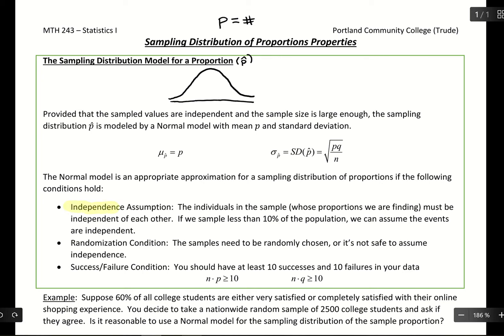We need to have independence. We need to have randomization. And then we're going to have this success failure condition which checks our sample size. And that's where you want to make sure you have at least 10 successes, at least 10 failures as well. And you have to have both. If one fails, then your sample size isn't large enough.